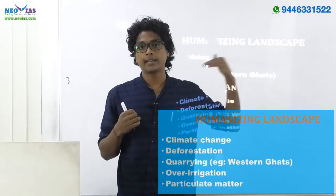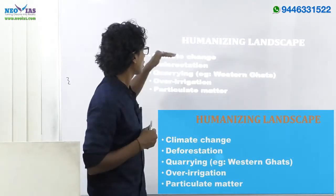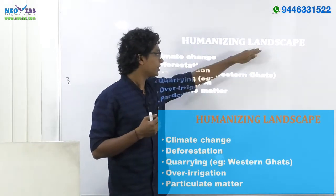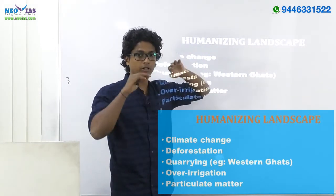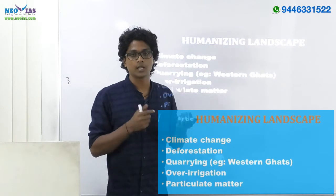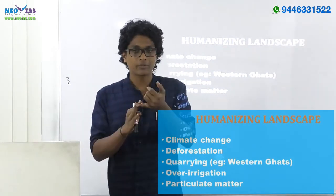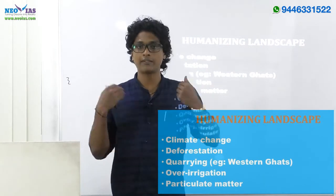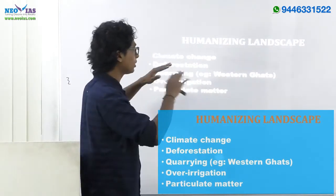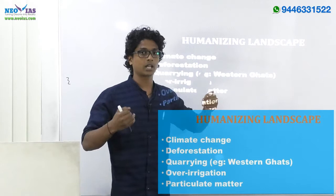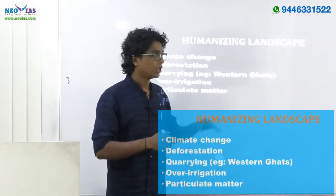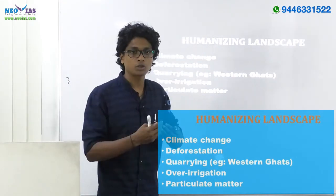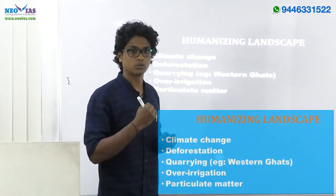Next, let's look at the aspect of humanizing landscapes. In a geographical perspective, landscape is related to the climate of a region, biography of the region, vegetation, land use — everything. It is not only related with landforms but also with climate and vegetation. So humanizing landscape simply means the anthropogenic effect on the Indian Monsoon.